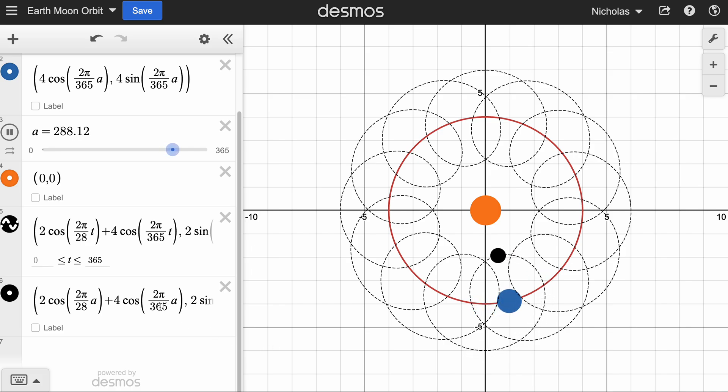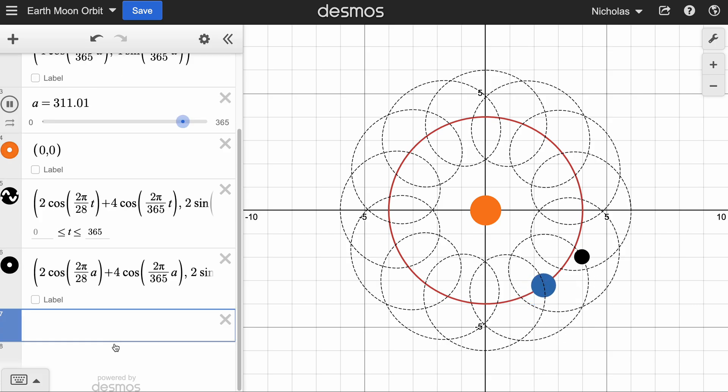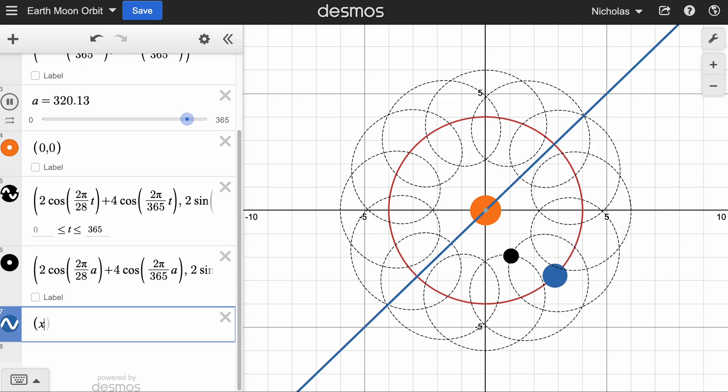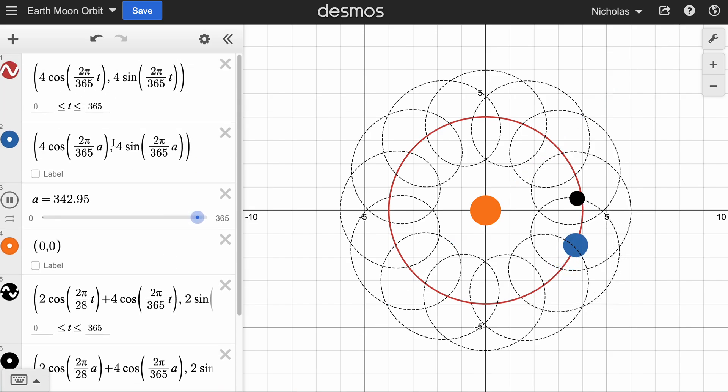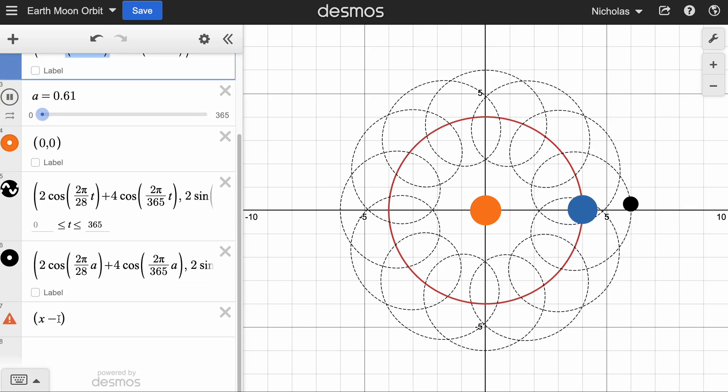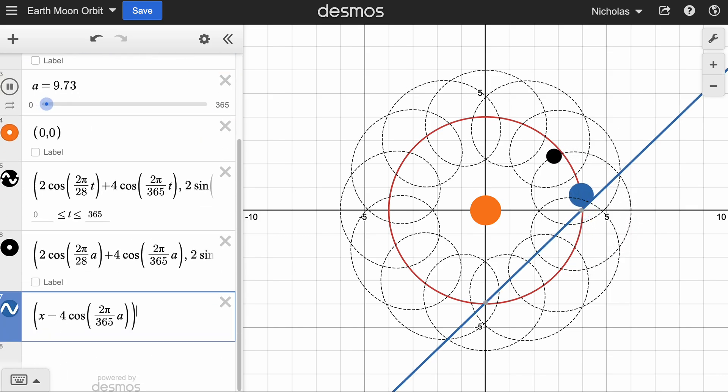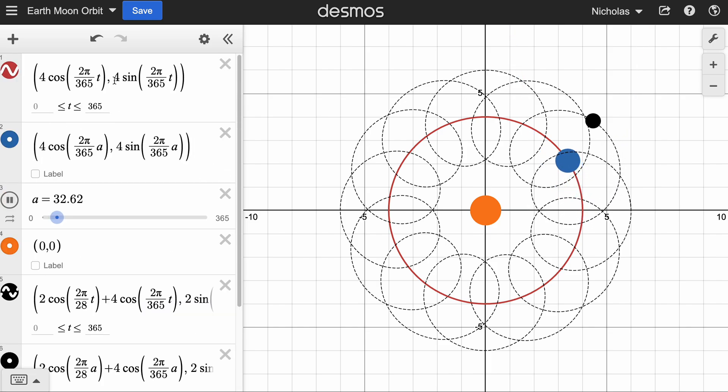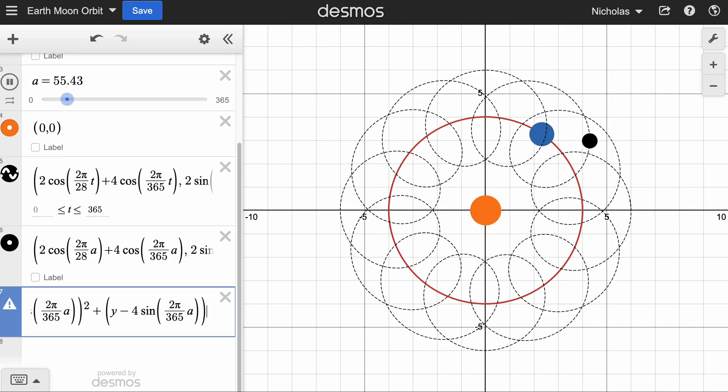We can also highlight the fact that we have a circle around the Earth using rectangular. And I want my circle to be centered at the Earth. So I'm going to take the Earth's coordinates which are changing. And the equation of a circle is x minus h squared plus y minus k squared. Oops, wrong one. And then that's equal to r squared. And we said the radius was two, so r squared is four.